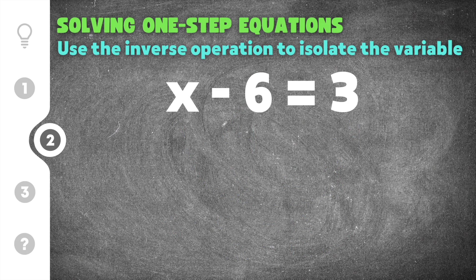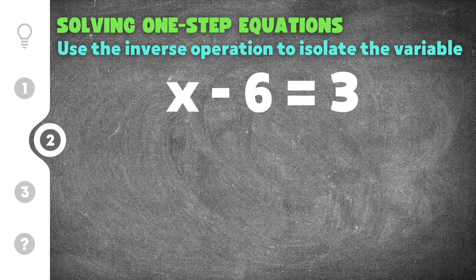Moving on to number two, we have x minus 6 equals 3. So again we're trying to isolate x and get it by itself. In order to do this we have to undo this minus 6. So the opposite of minus 6 is plus 6, so I'm going to go ahead and add 6 here and I'm also going to add 6 to the other side. So we have x now on this side because the 6 is cancelled, and then we have 3 plus 6 on this side which is 9. So our solution is just going to be x equals 9.